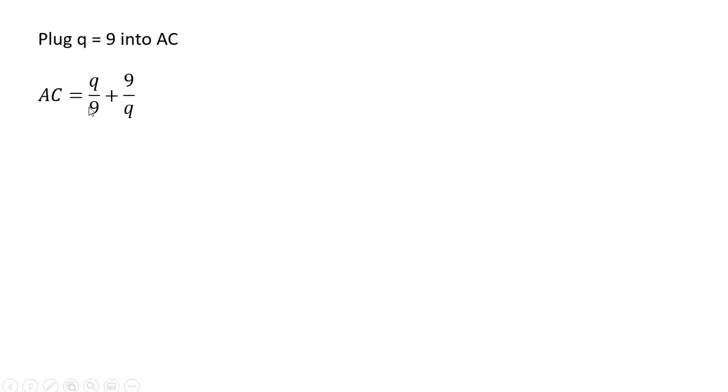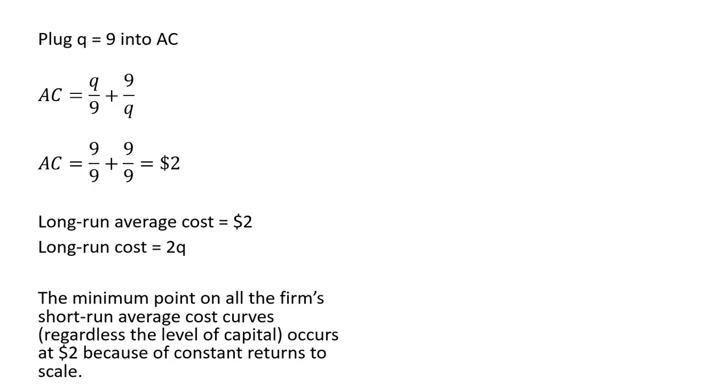And at 9 units of output, we plug that 9 into the average cost equation. Average cost, again, is $2. So once again, long-run average cost is just going to be $2. And the long-run total cost is just 2 times Q. So as I mentioned before, the minimum point on all the firm's short-run average cost curves, regardless of the level of capital, occurs at $2 because of constant returns to scale.